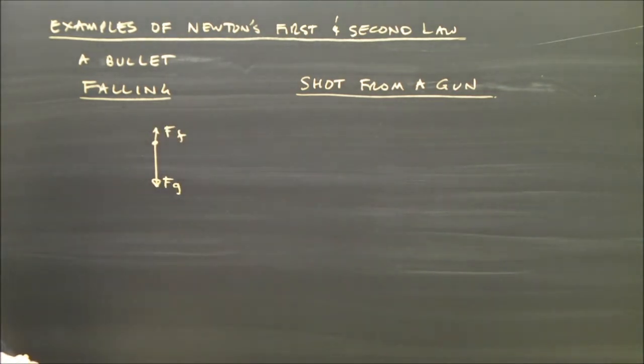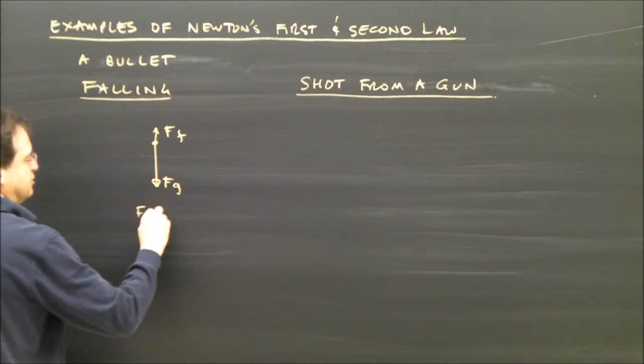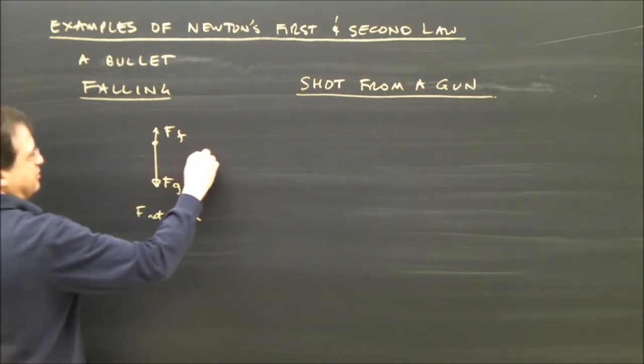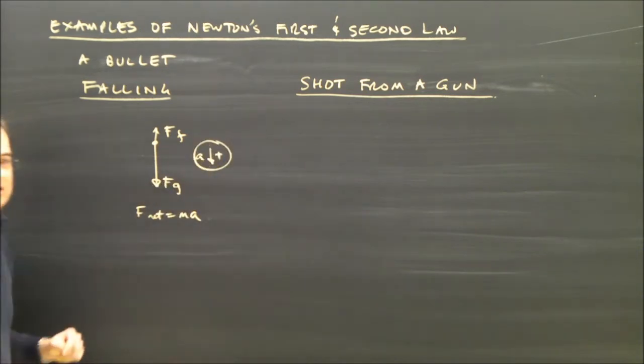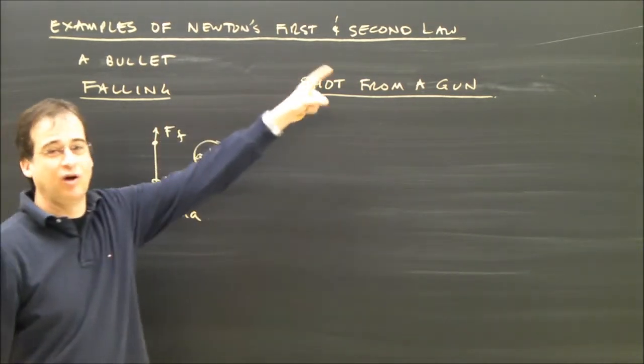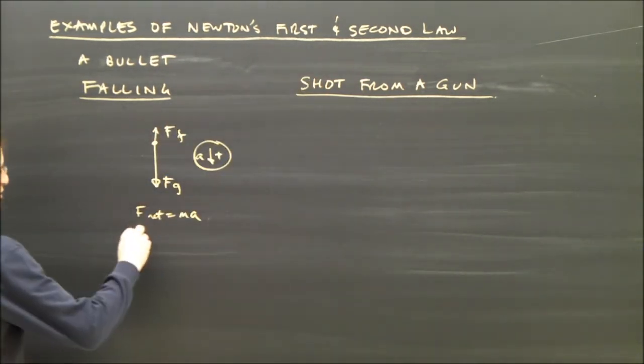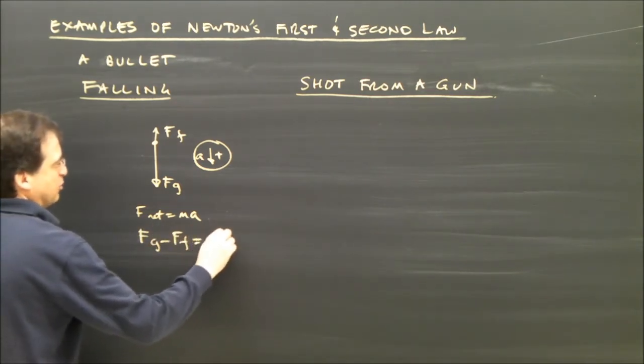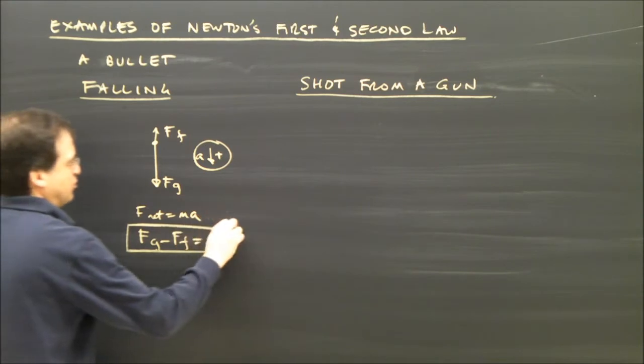There we go. So the equation that would govern this would be that it is accelerating down. It has an unbalanced force, so Newton's second law applies. So this formula applies. I got Fg minus force of friction equals Ma. There's the equation that governs it.